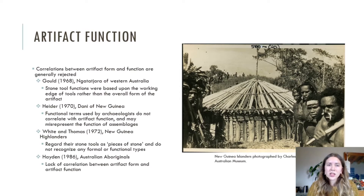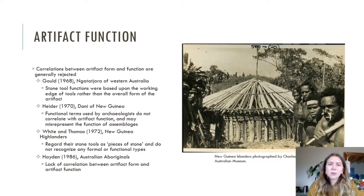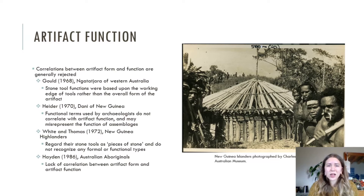One of the other primary ways to study possible tool use function, aside from microwear analysis, is through ethnographic comparisons. By looking at how contemporary groups manufacture and use stone tools, we can draw inferences about how similar tools were made and used in the past. The notion that stone tool functionality is variable and not limited by shape is supported through a lot of ethnographic studies as well.